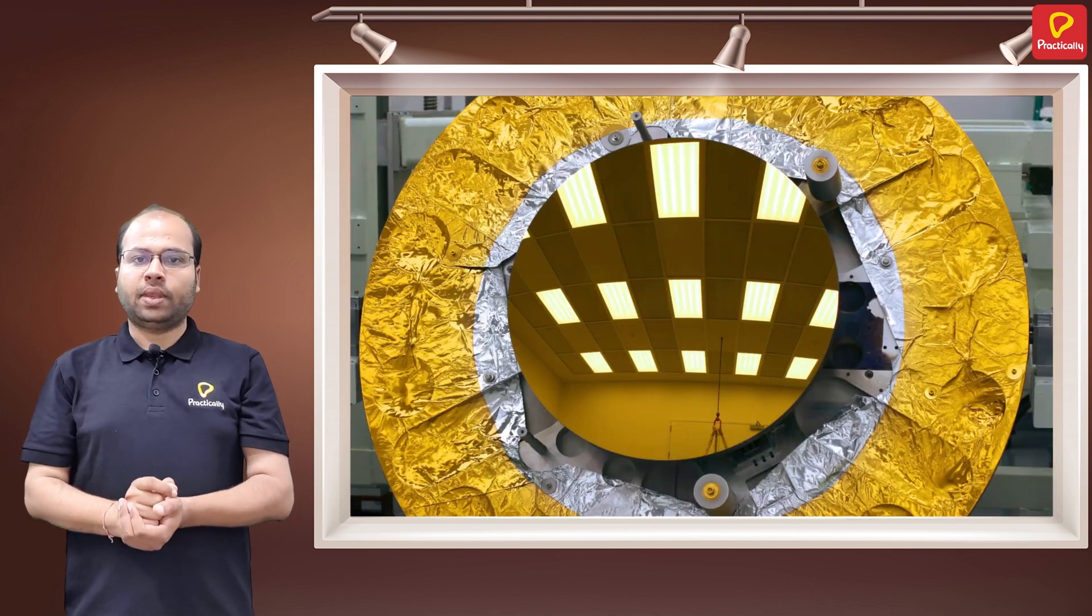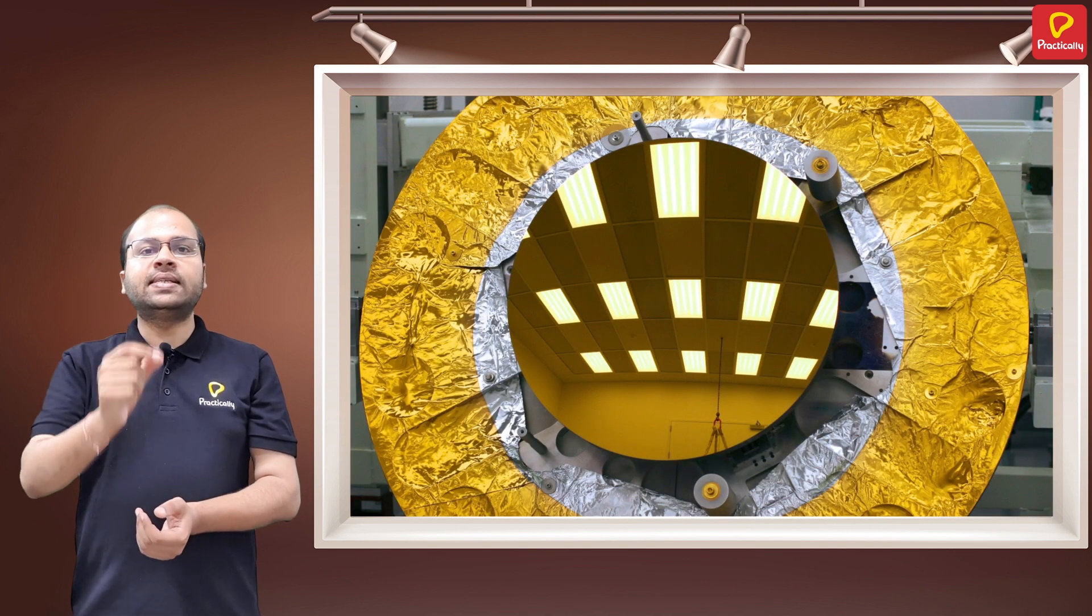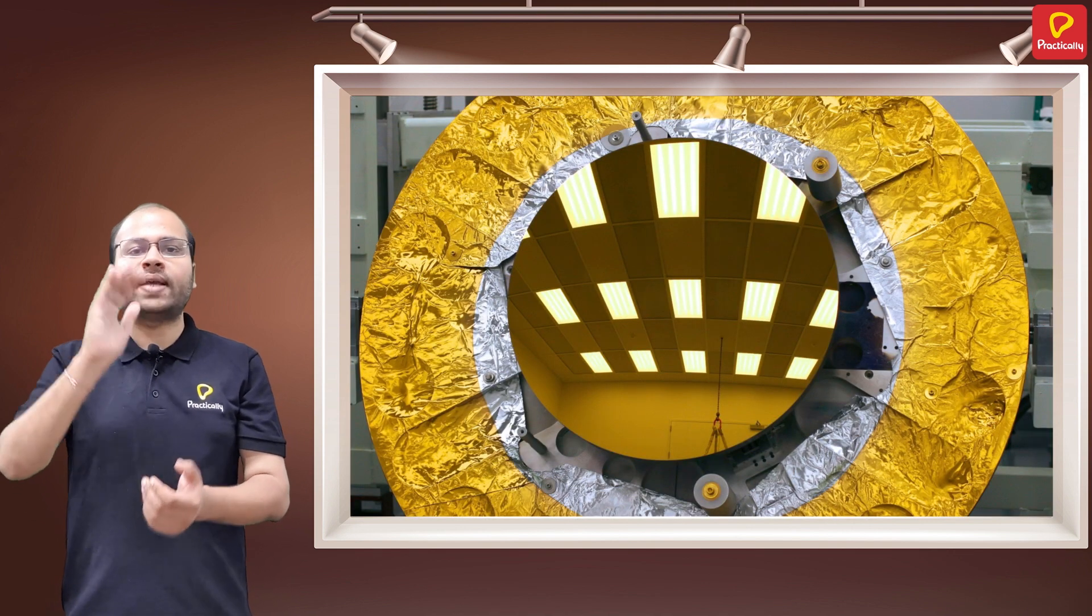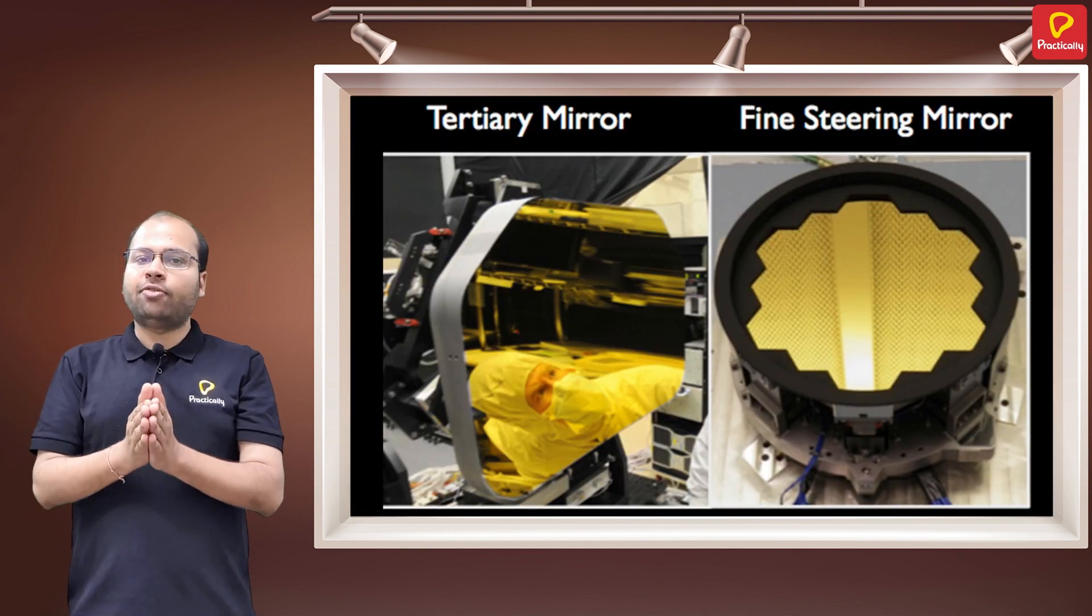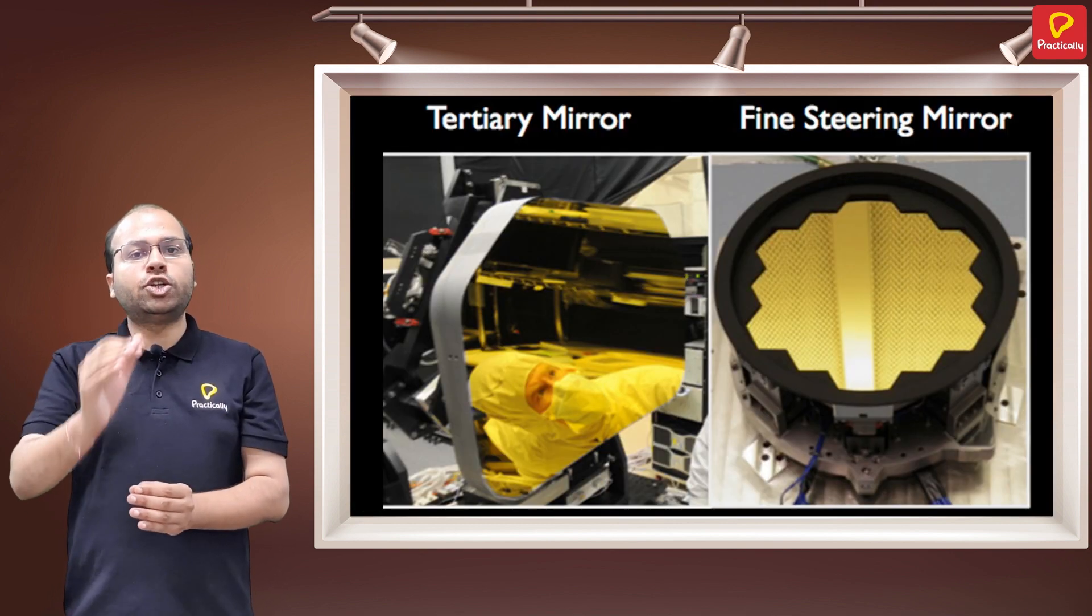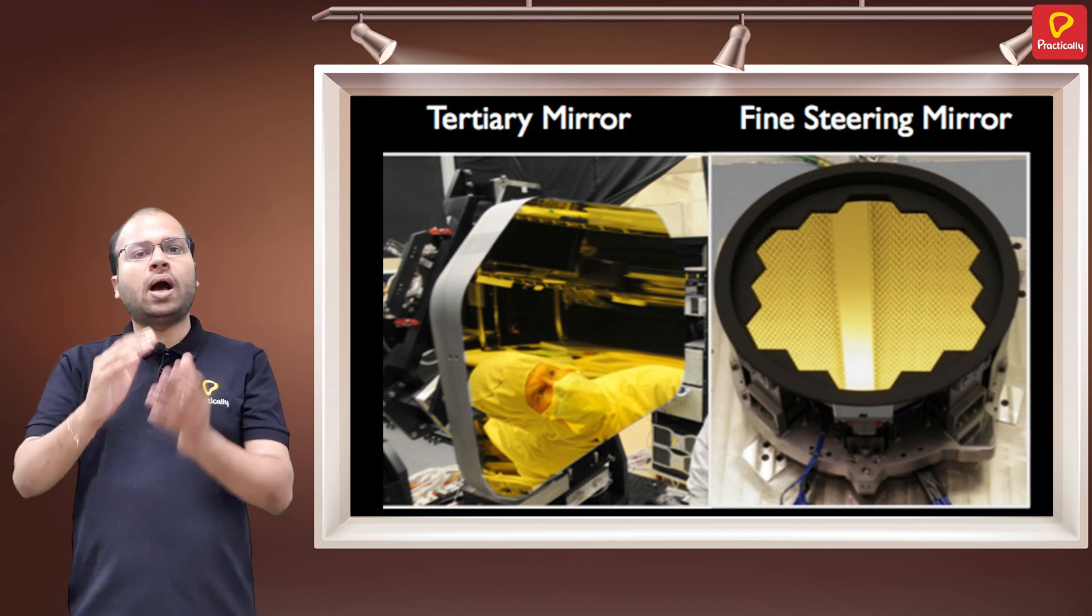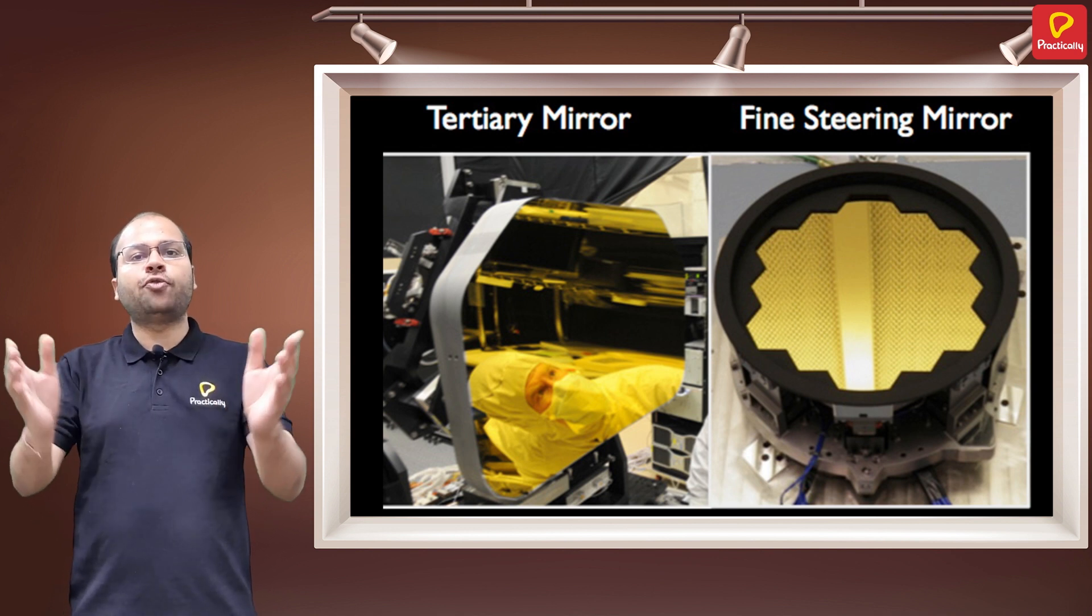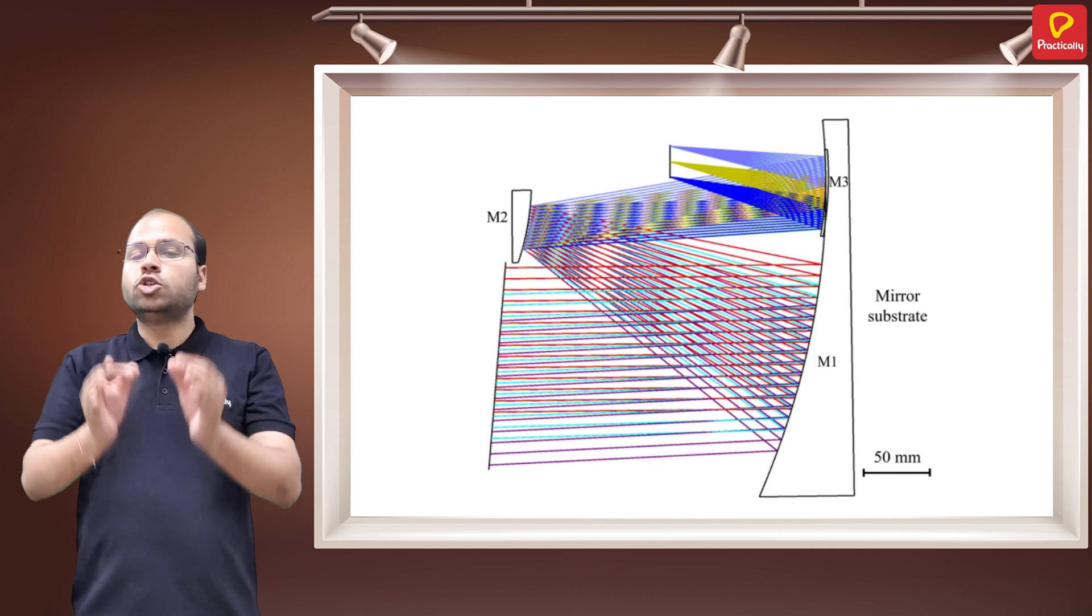The first mirror is the primary mirror, which is concave. The second mirror is the secondary mirror, which is convex. And we have a third mirror, which is known as the tertiary mirror, which is to allow for a wider field of view and also to remove any kind of optical aberrations.